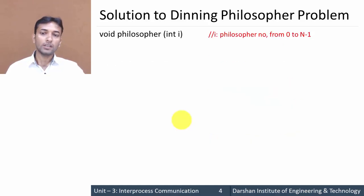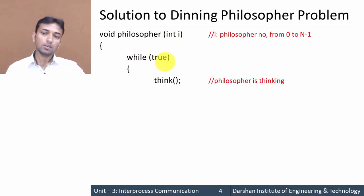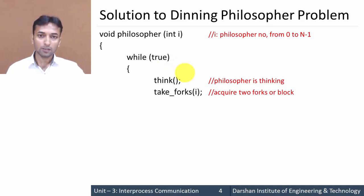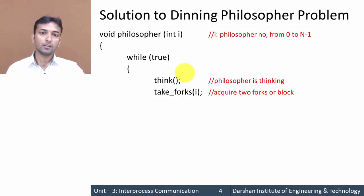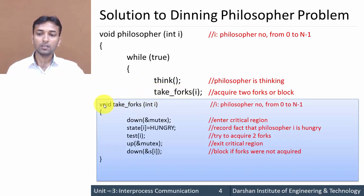Next, void philosopher(int i), where the parameter i is the number of the philosopher from 0 to N-1. Inside a while(true) loop, the philosopher first thinks. Then take_fork(i) is called — the philosopher becomes hungry and wants to eat food from its plate. To eat, the philosopher requires two forks, and can only access the fork immediately to its left and immediately to its right. So to acquire these forks, the take_fork function is called.